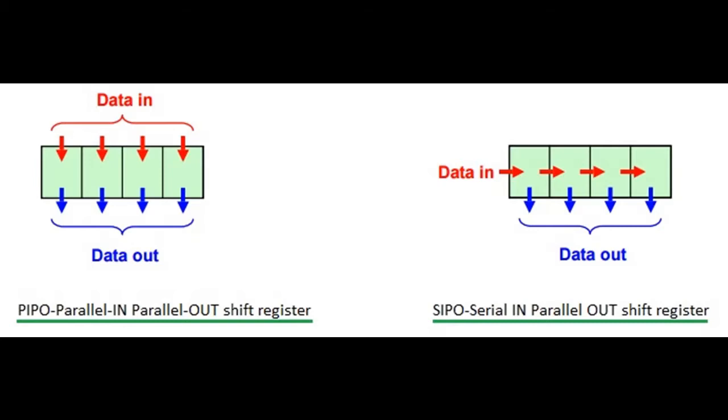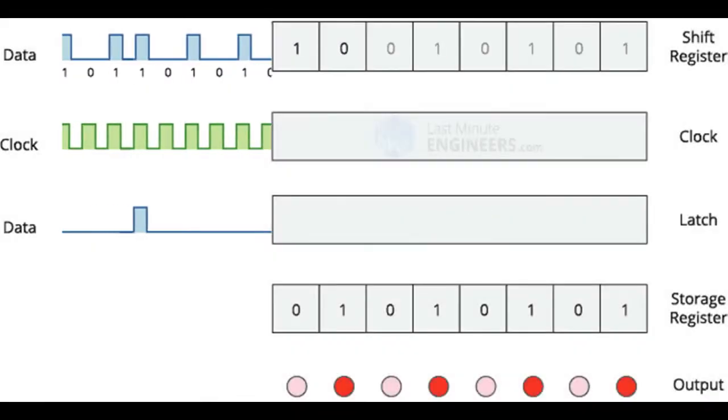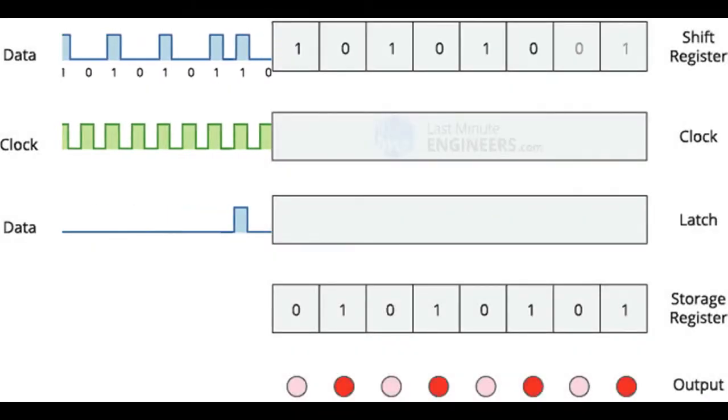So with only two signals you can send your byte of data to the register instead of using eight signals. Let's take a look at this animated GIF which comes from the lastminuteengineers.com site that shows very nicely how a SIPO shift register works.